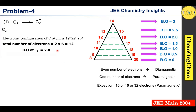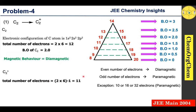Since 12 is an even number, C₂ is diamagnetic. For C₂⁺, we remove one electron from 12, giving 11 electrons. From the diagram, 11 electrons corresponds to a bond order of 1.5. Since 11 is odd, C₂⁺ is paramagnetic. So the bond order has decreased (2.0 → 1.5) and the magnetic behavior has changed — this does not satisfy the question, so option 1 is incorrect.